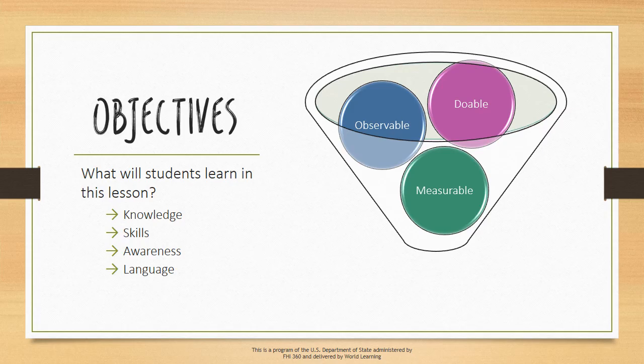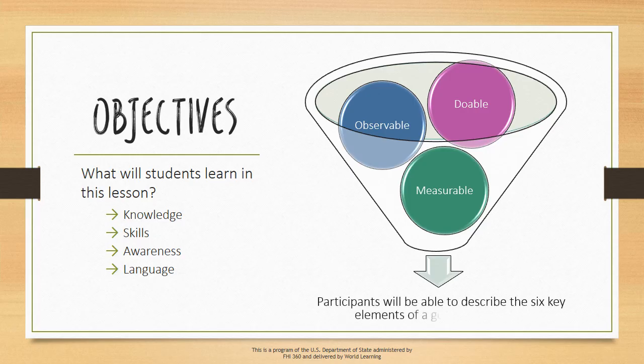For example, an objective of this current lesson is for readers to know the key elements of a good lesson plan. To word this in a way that can be observed and measured, we can say that after this lesson, participants will be able to describe the six key elements of a good lesson plan.